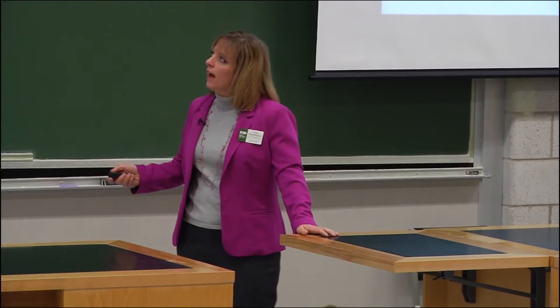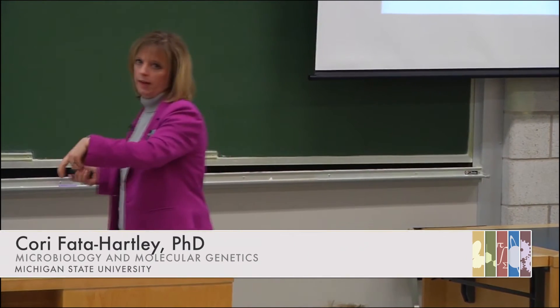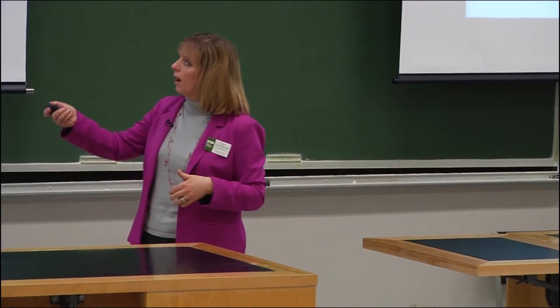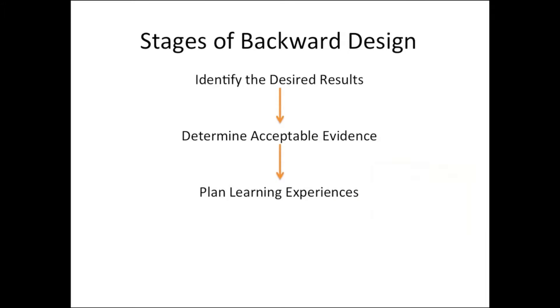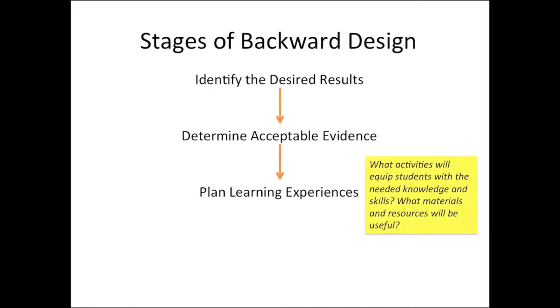What do they have to do in order for you to confirm that they really get this? And then — this is why it's called backward design — only after you've identified those two things do we begin to plan the learning experiences: what resources and activities inside and outside of the classroom will allow the students to ultimately achieve those objectives that we have set out?